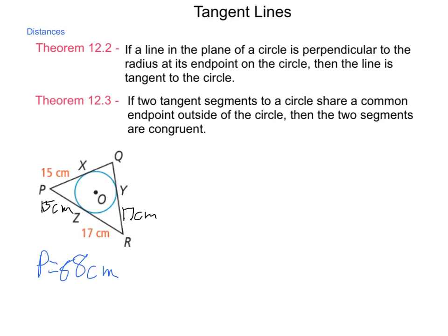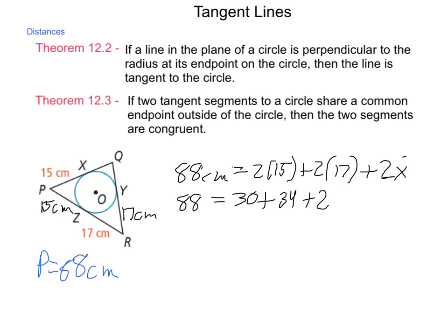So what do we have so far? We have 88 centimeters. The perimeter is equal to 2 times 15 plus 2 times 17 plus 2 times this unknown value, X. Simplifying, we have 88 is equal to 30 plus 34 plus 2X. 30 plus 34 is 64 plus 2X.